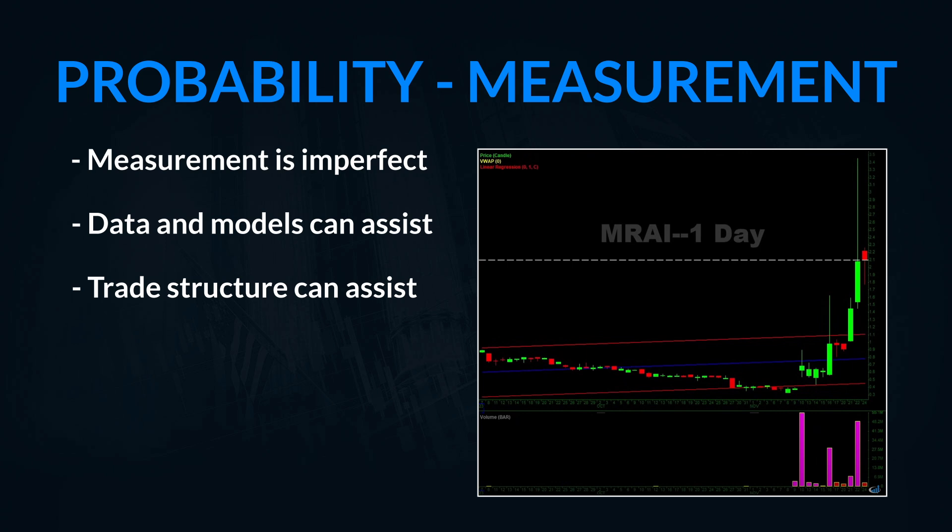One of the keys to increasing your probability of being right as a trader is to look for a confluence of factors — many different variables all moving in the same direction. The more of those variables that join along, the higher the probability that the stock plays out the way you want it to. So now that we've looked at risk, reward, and probability in theory, let's look at them in practice.